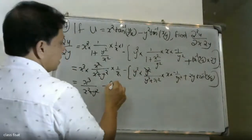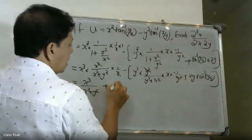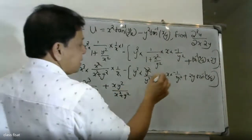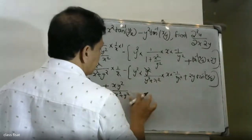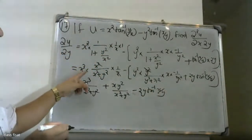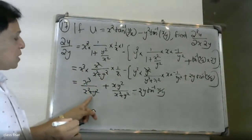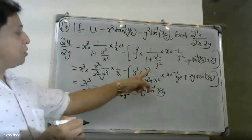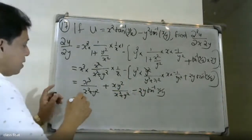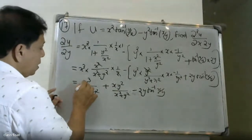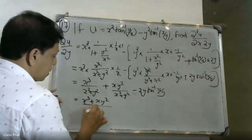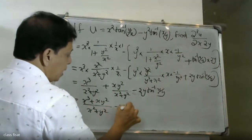Simplifying: we get x square into x square divided by x square plus y square, and 1 plus y square by x square becomes x square plus y square. Then x square into 1 by x, minus y square into y square divided by y square plus x square, times x into minus 1 by y square, plus 2y tan inverse x by y. This gives plus xy square by x square plus y square, minus 2y tan inverse x by y.